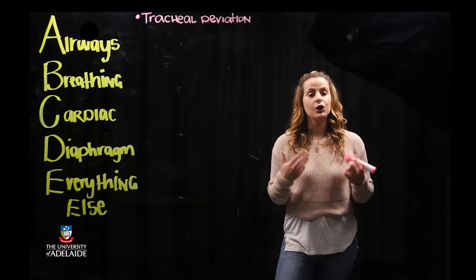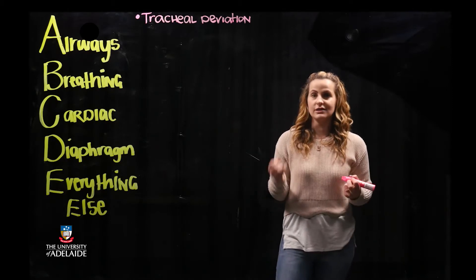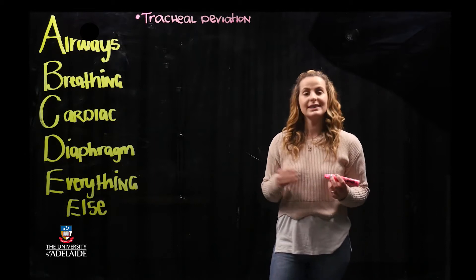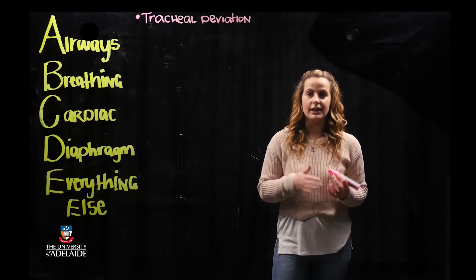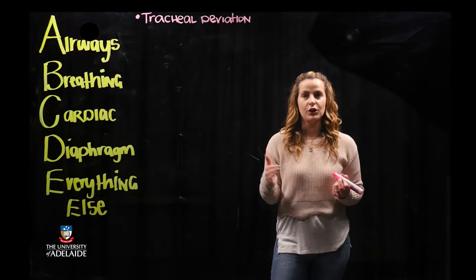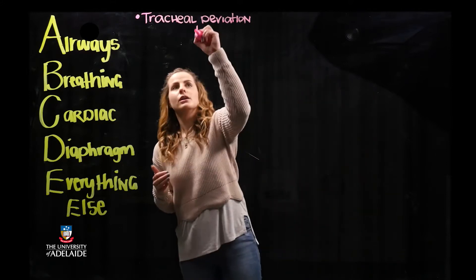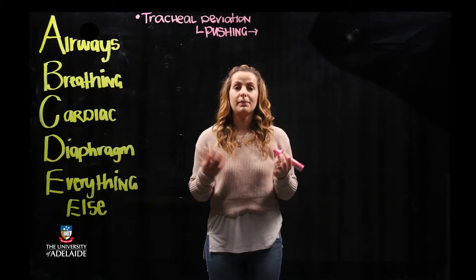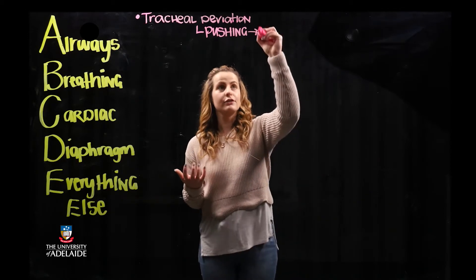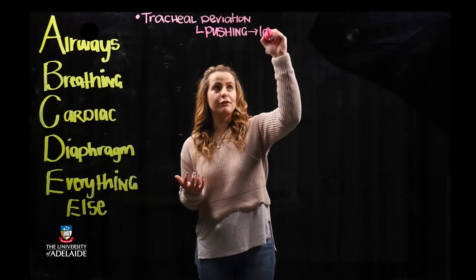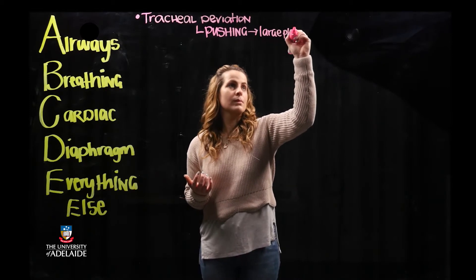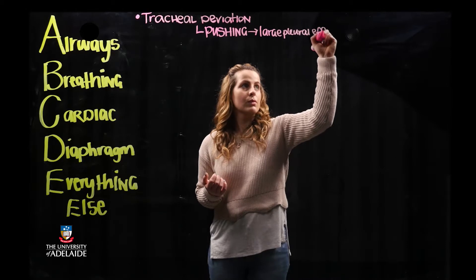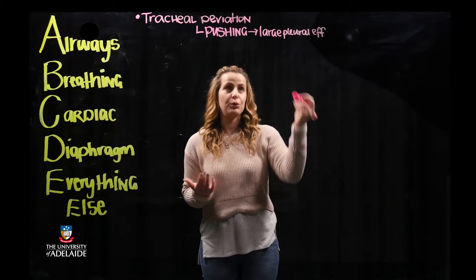This is usually going to be indicative of where pathology is located. If we see pushing of the trachea to a particular side, this is then going to be indicative or suggestive of a large pleural effusion or tension pneumothorax.